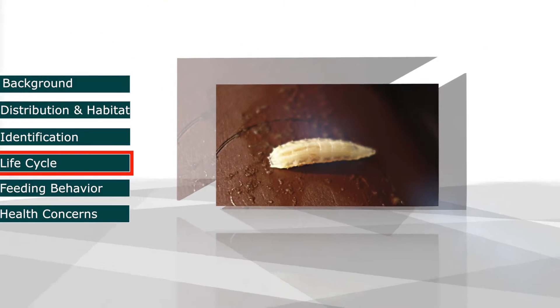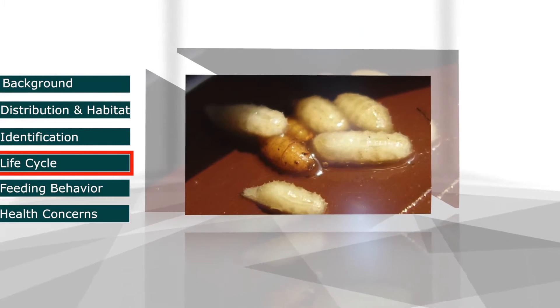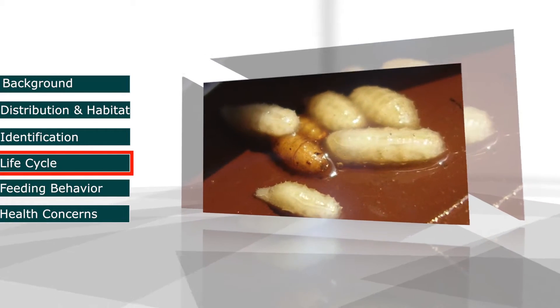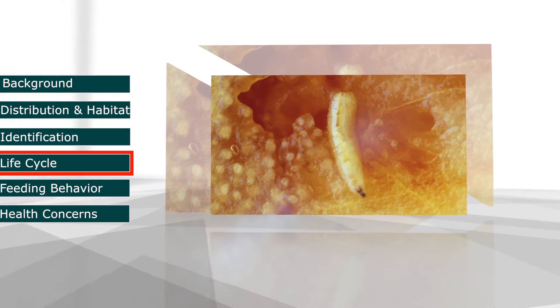Female fruit flies lay 10 to 20 eggs in fruit, with an average of 400 eggs laid in their lifetime. These eggs that are approximately half a millimeter long will hatch anywhere from 2 to 12 days later.